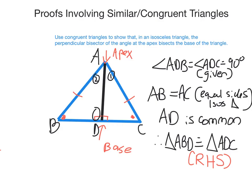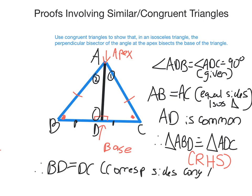Now I've shown that they are congruent triangles. Because this side and this side are corresponding, they must be equal. Therefore BD must equal DC — they are corresponding sides of congruent triangles. And that's exactly what I set out to prove. I've shown that this line here cuts BC in half, because B to D equals D to C. So I have in fact shown that the perpendicular bisector of the angle bisects BC. Hope you've enjoyed the video. Have a great day.